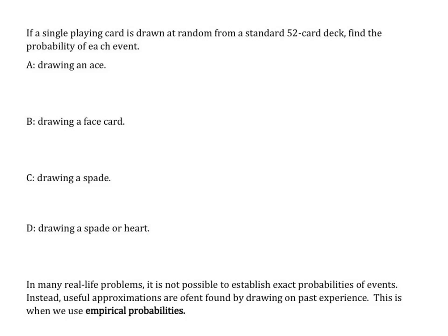If a single playing card is drawn at random from a standard 52 card deck, find the probability of each event. So we have 52 total outcomes when we draw a card. Drawing an ace: there are four aces in a deck. So four out of 52, which is the same as one out of 13 chance.